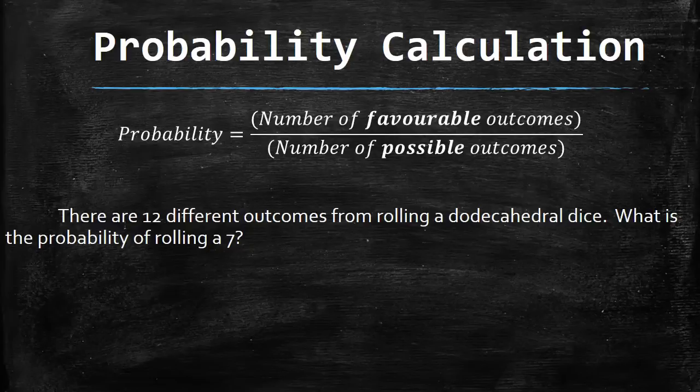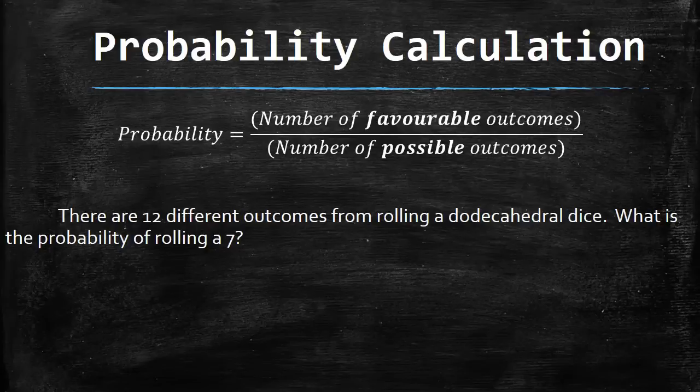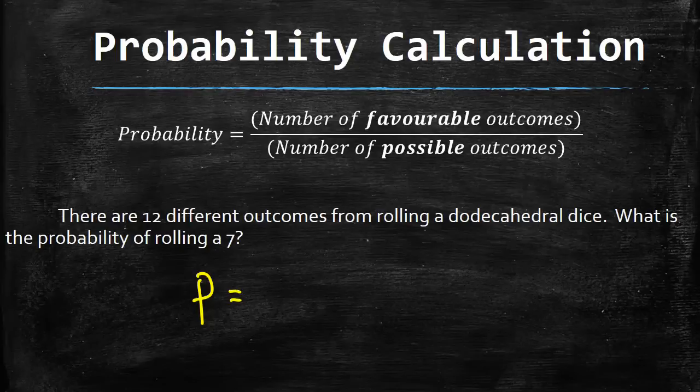Let's look at this question. There are 12 different outcomes from rolling a dodecahedral dice - that's just a dice with 12 sides. What is the probability of rolling a 7? We know there's only one way to roll a 7 with one die. So we can write that our probability, I'll use P,